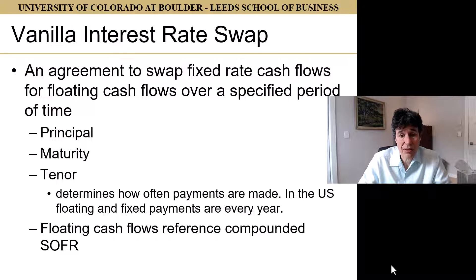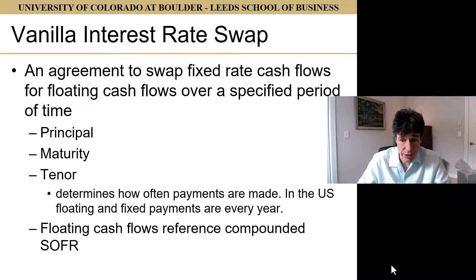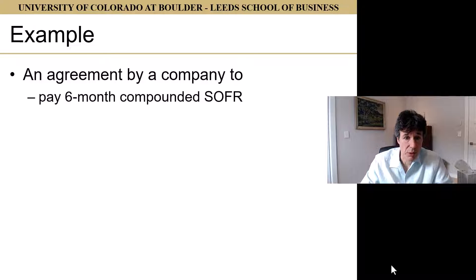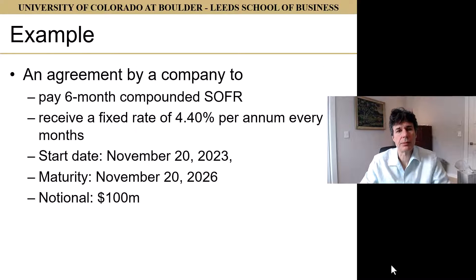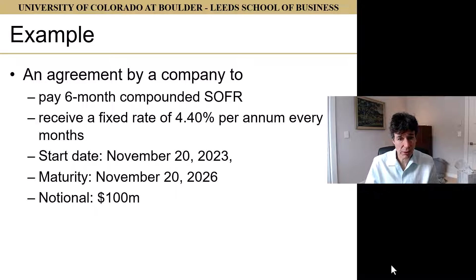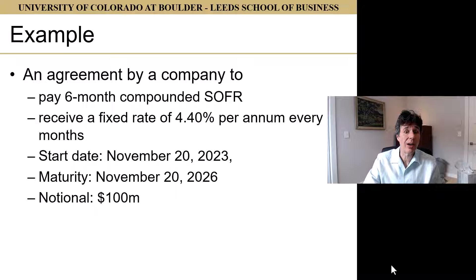In the US, floating cash flows used to reference LIBOR, but LIBOR has gone away and been replaced by SOFR, so these now reference compounded SOFR. Here's a specific example: an agreement by a company to pay six-month compounded SOFR and receive in exchange a fixed rate of 4.4% per period every six months. Start date: 20th November 2023. Maturity: 20th November 2026. Notional: $100 million. We're going to look at all cash flows on a notional of $100 million.